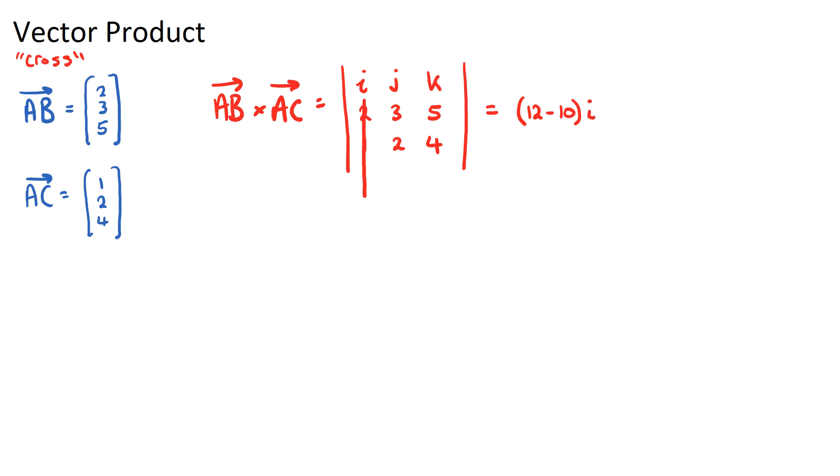Now the second component, j. Something to remember, and unfortunately a lot of students forget this, the j term, before we put something j, this always needs to have a minus sign. So we need to put a minus only in front of the j term. Let's ignore the rest of that row and the j column, and we use the other four numbers. So 2 times 4 is 8, and we're going to subtract 5 times 1, which is 5, and that's our j term.